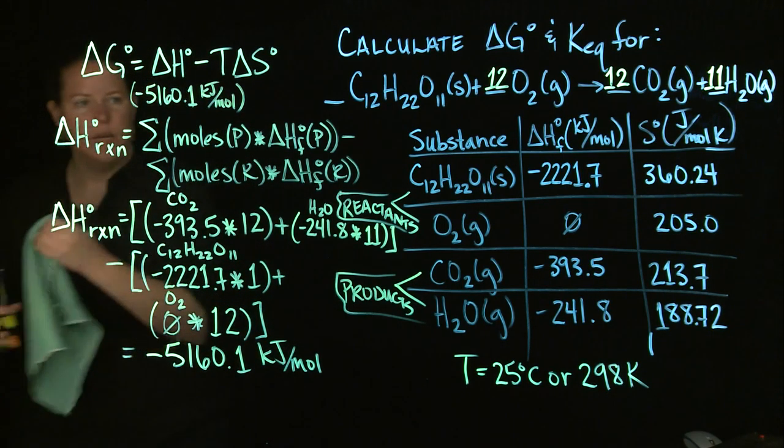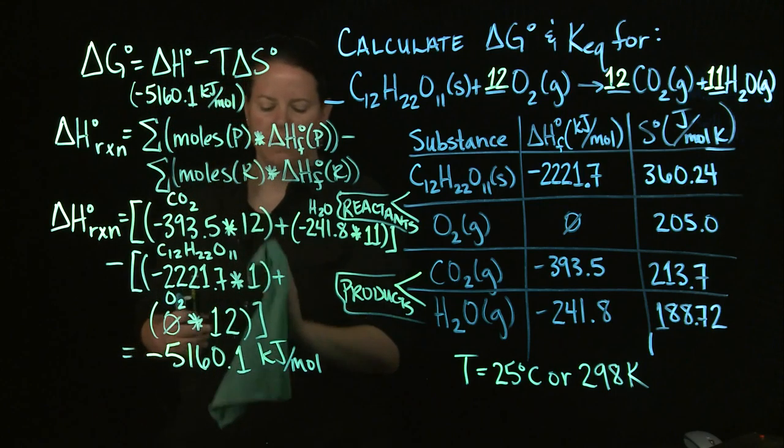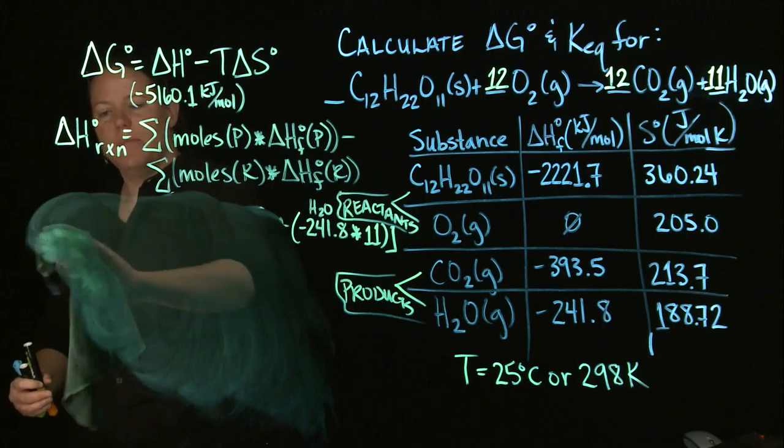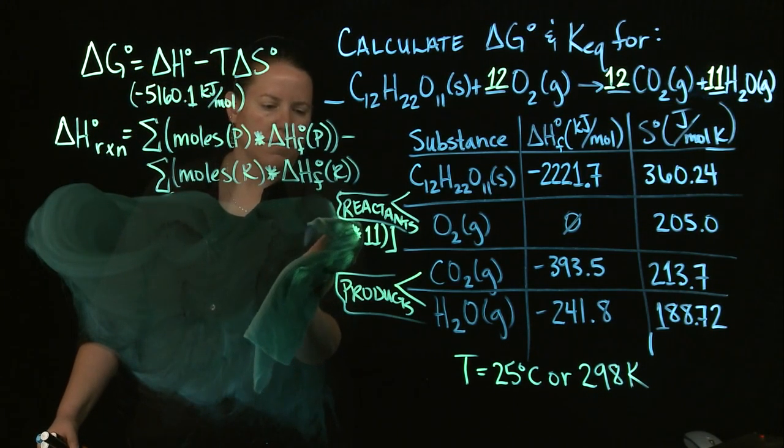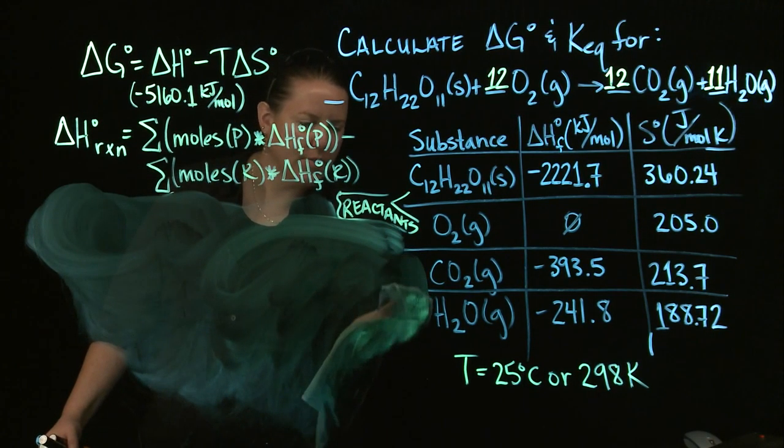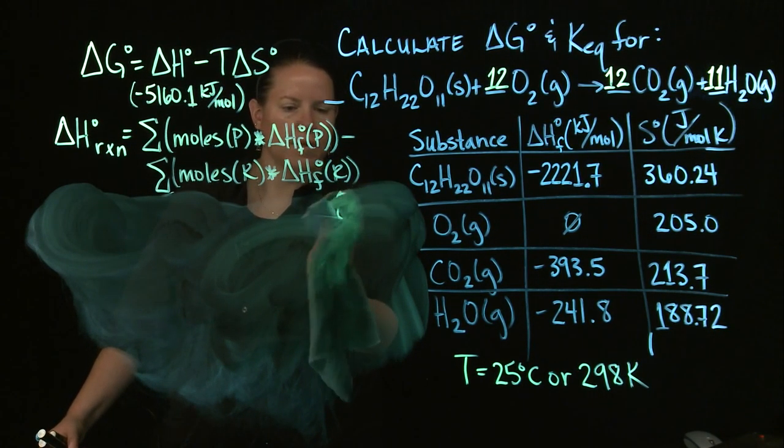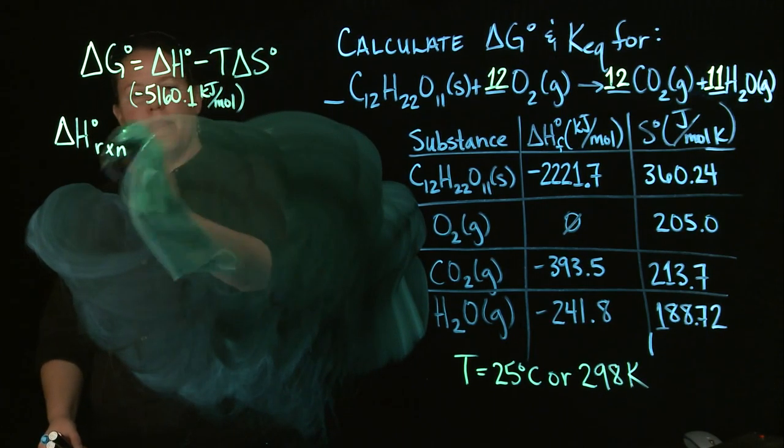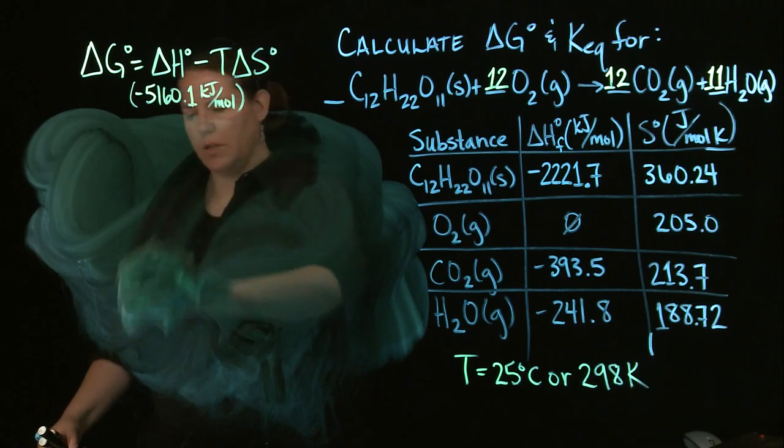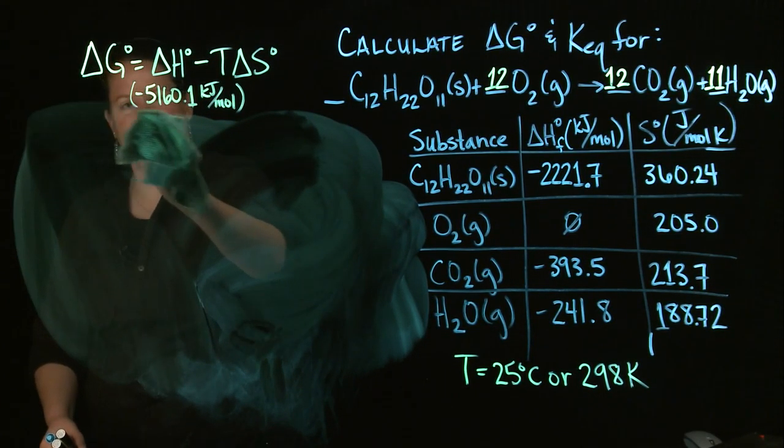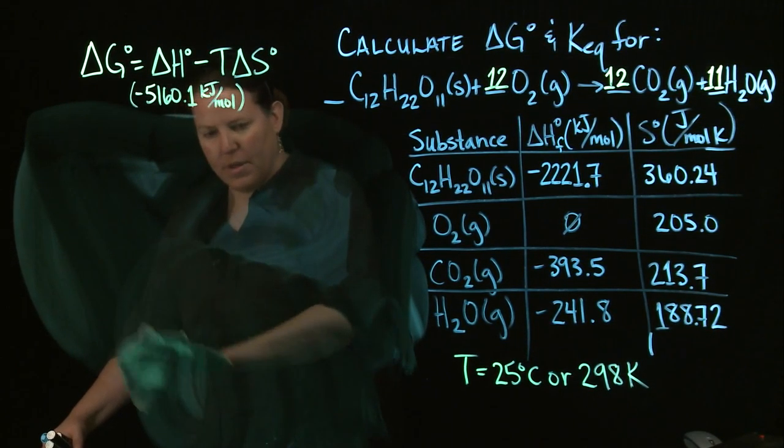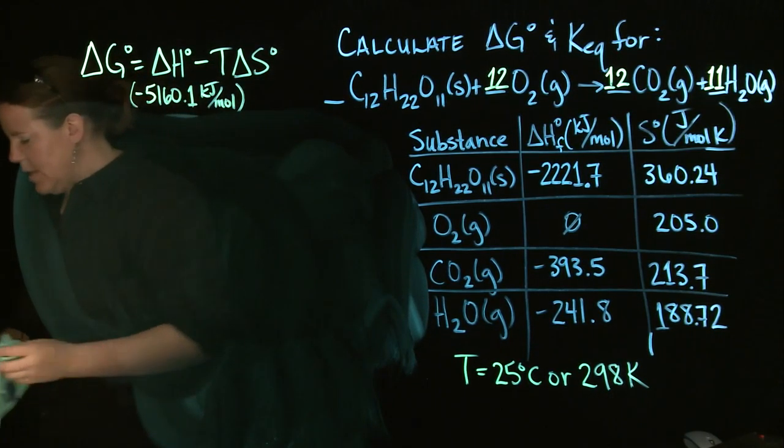I'm going to write that up here too. Negative 5160.1 kilojoules per mole. That's H. Let's erase all of this and do the exact same thing for S. I do the exact same thing over again, but now I'm going to do it for S. So I'm going to use the S values and we're going to erase the products and the reactants. Hopefully we know where those are at this point.